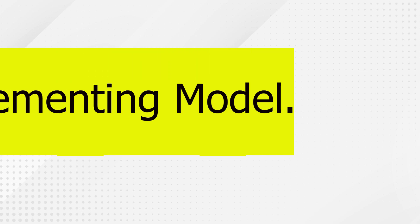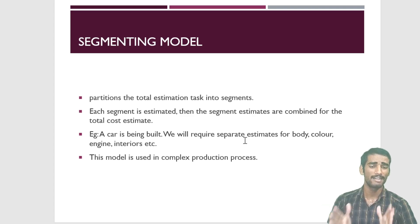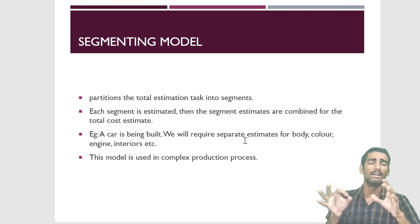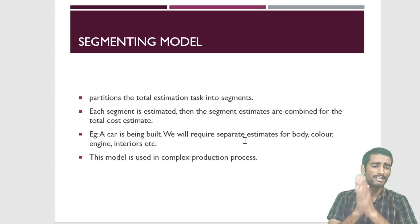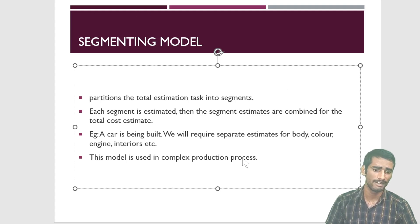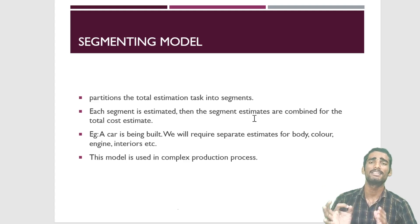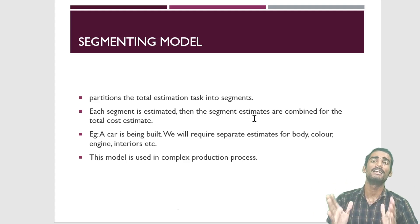Coming to the next very important model — the segmenting model. The word 'segmenting' itself gives a hint: here we basically segment our total project. We partition the total estimation task into segments. Each segment is estimated separately, and then the segment estimates are combined for the total cost estimate. We divide a whole project into various segments, estimate the cost for each segment, and then combine all those costs.